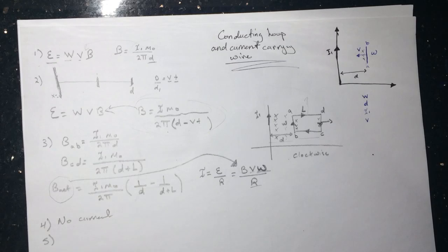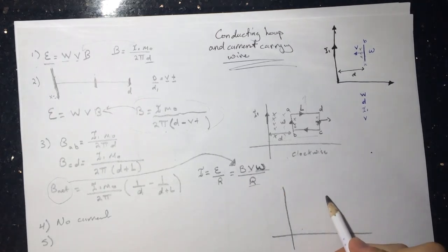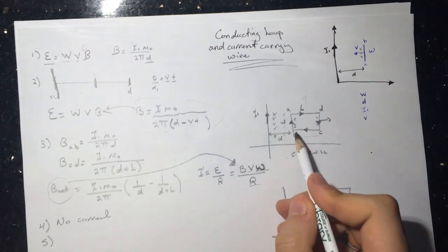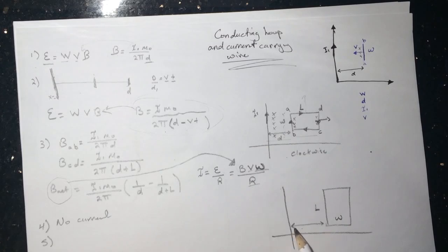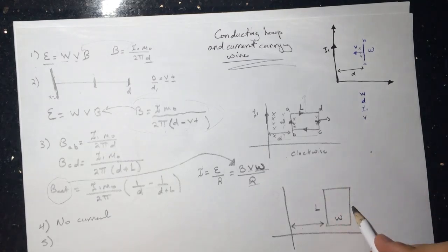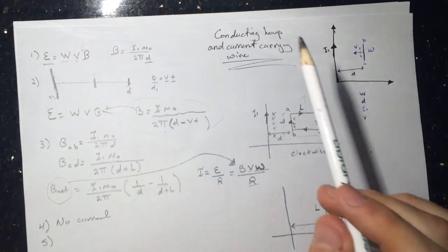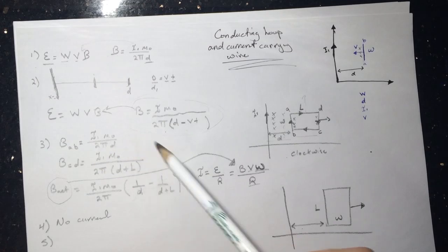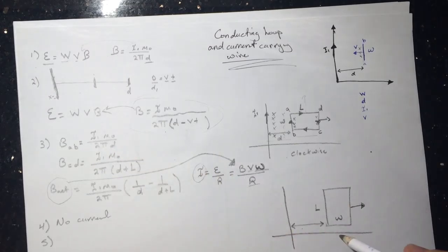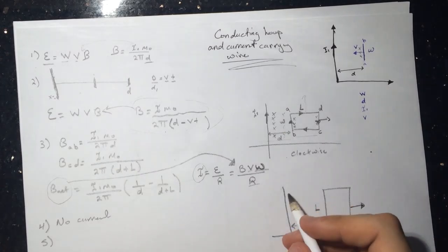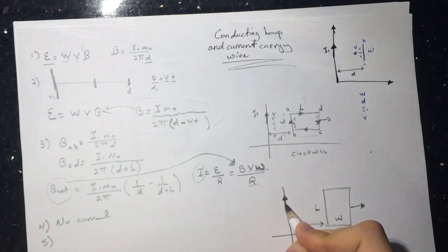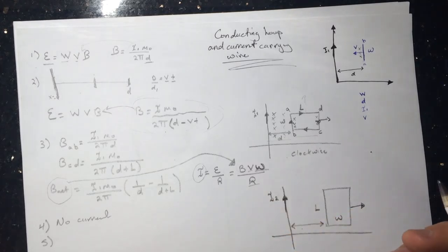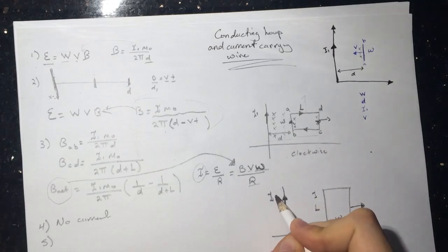Question five is tricky. Now we have a new scenario where the loop is rotated so that the dimensions are L (along the direction away from the wire) and W (along the wire). The distance is still d, R and V are the same. We're told the induced current in this rotated loop equals the induced current from question three.